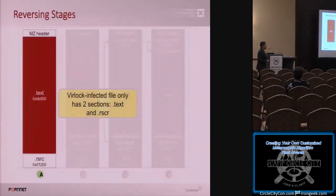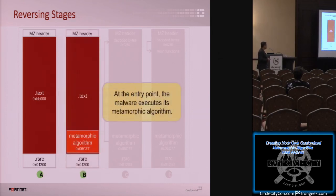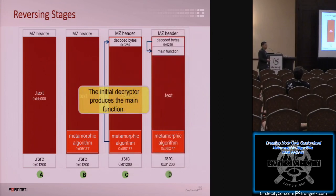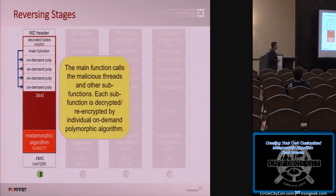This malware actually has different stages. When you get an infected file, you only have two sections: the .text and the .rsrc (resource). Somewhere down in the .text is your metamorphic algorithm — the metamorphic code. When you run the metamorphic code, it will decode a few bytes at the top of the file after the header. Those decoded bytes are responsible for creating the main function, which is responsible for the on-demand polymorphic.